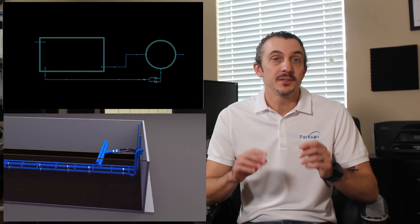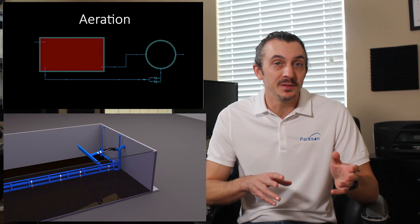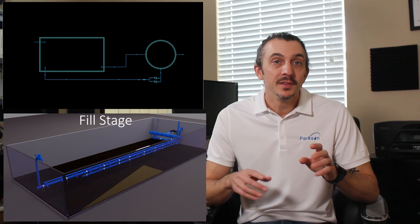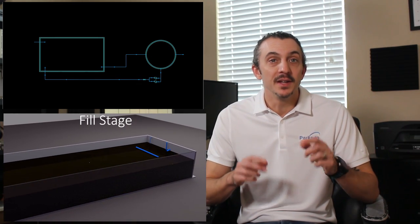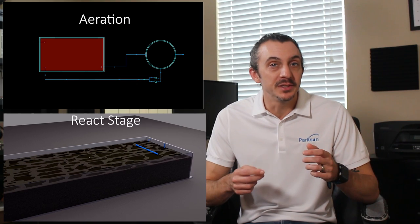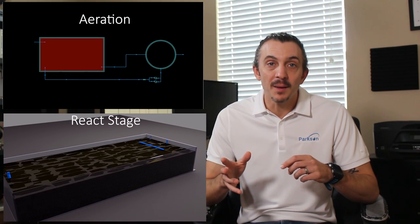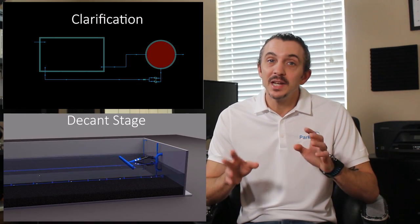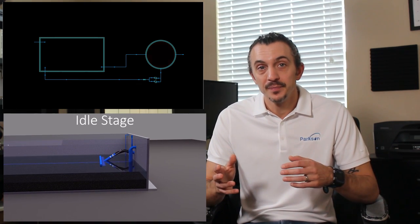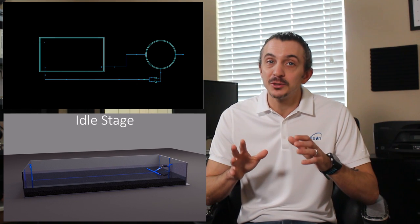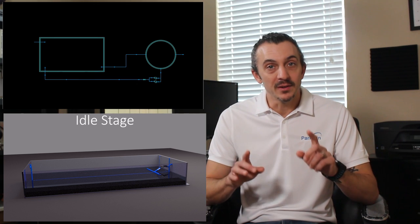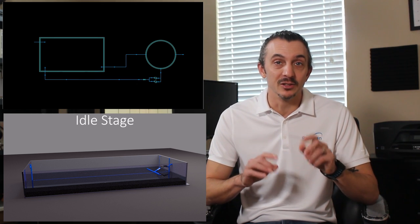For a single-stage process, traditionally we'd have an aeration tank followed by a clarifier. In an SBR, the tank would fill up initially, then air would be added for the aeration step. Then the air would stop and it would settle and decant the water off the top, which is the same thing happening in the clarifier. If we wanted to use the same single-stage plant for biological nutrient removal, well, we're out of luck — we'd have to tear it down and build something that looks like this.